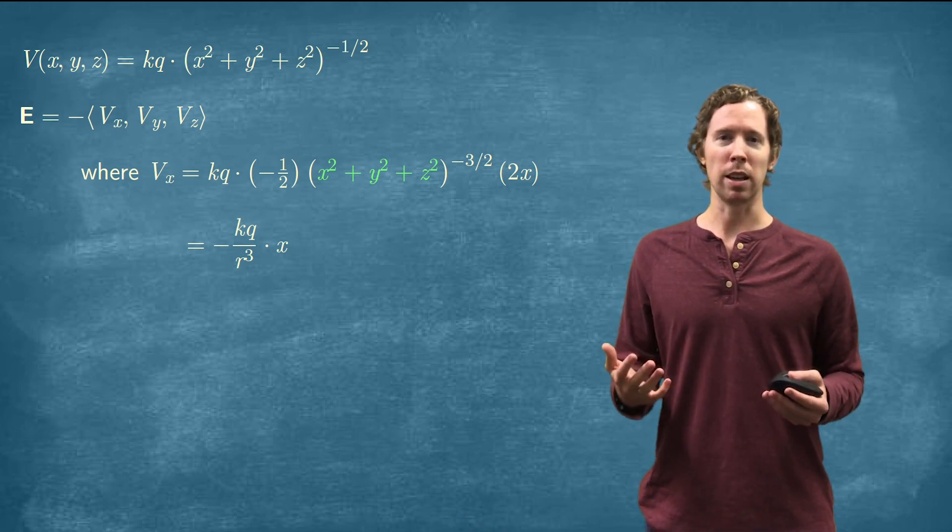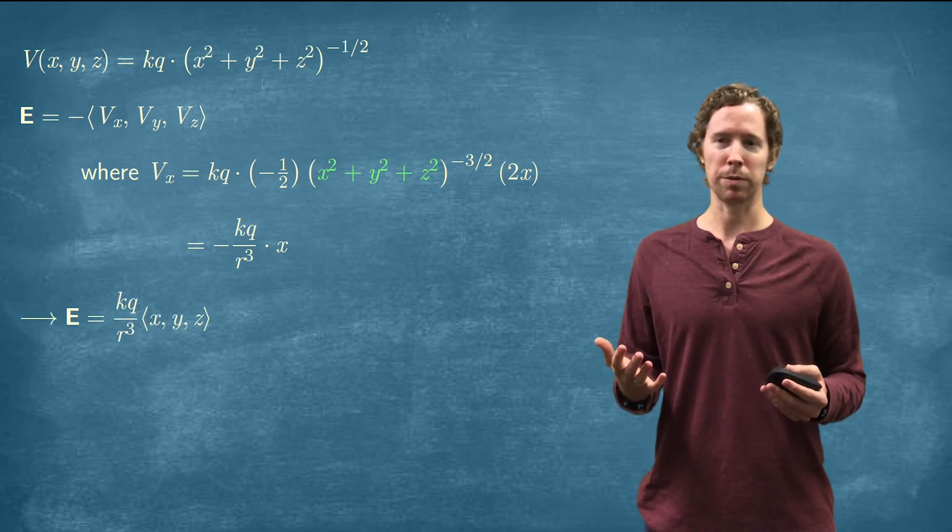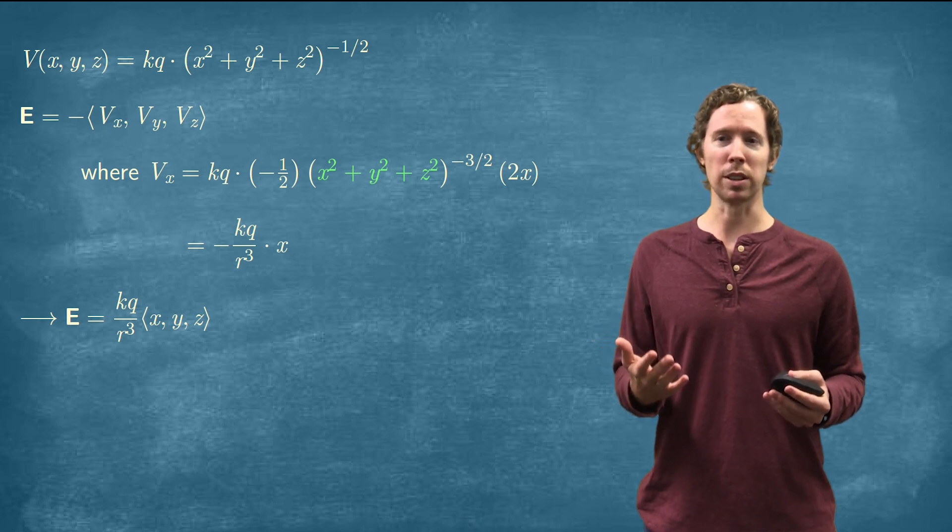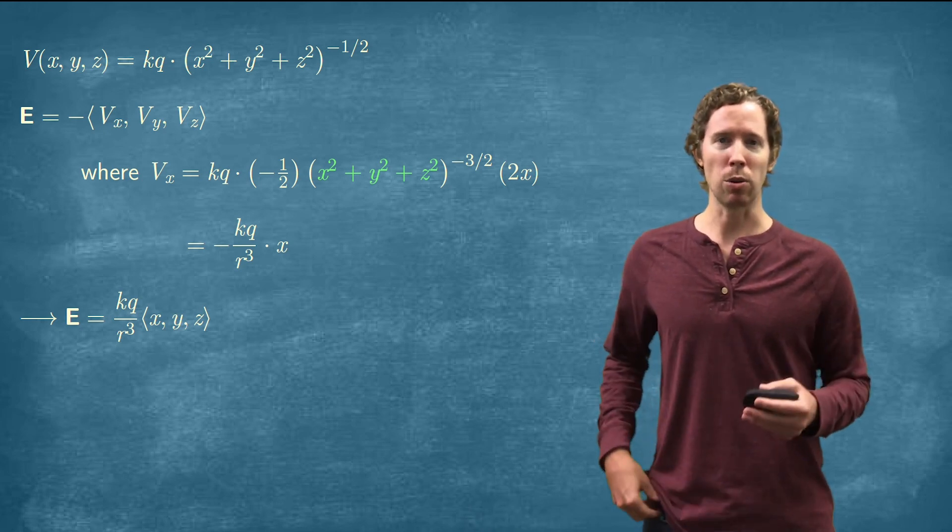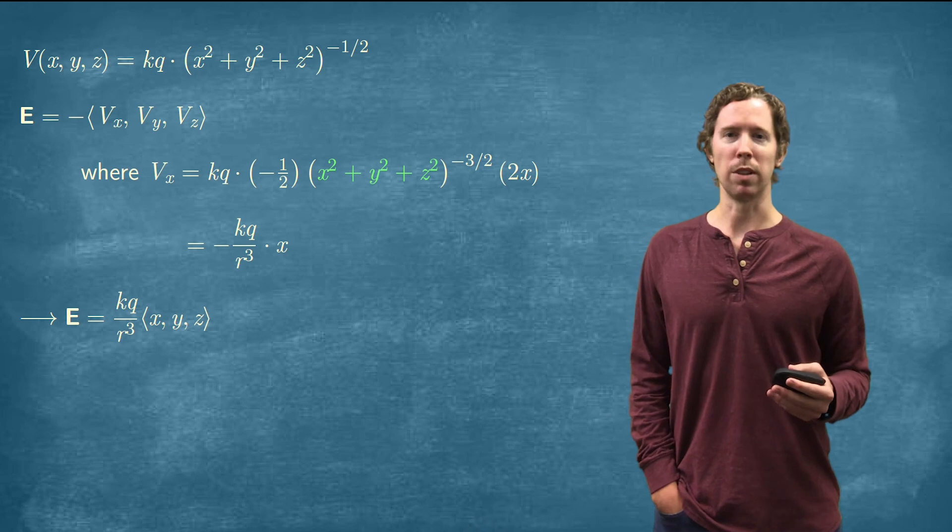So in the end, when you simplify all of this, that electric field is equal to positive KQ over R cubed times the vector X, Y, Z.